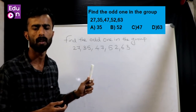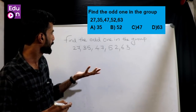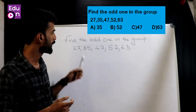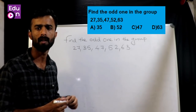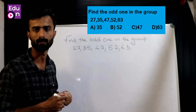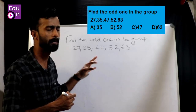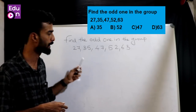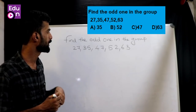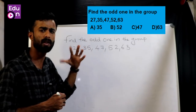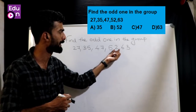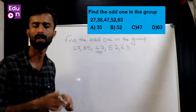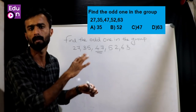We have to identify the odd one out. Looking at this set from the 2015 question, we examine whether each number is prime. 37 is prime, 35 is not prime, 47 is prime, 63 is not prime — but 52 is a composite number and stands out. The answer is 52, as 47 is a prime number and 52 is the composite number here.